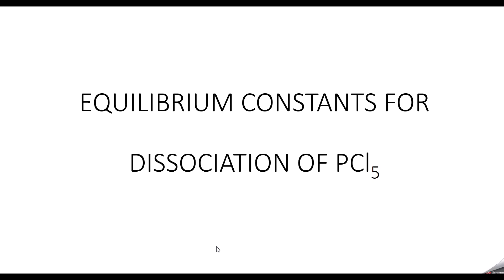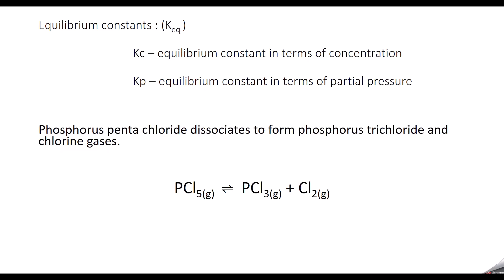In this video, we discuss the equilibrium constant for the dissociation of PCl5. Equilibrium constants are Kc and Kp. Kc is the equilibrium constant in terms of concentration, and Kp is the equilibrium constant in terms of partial pressure.